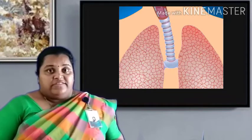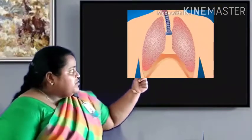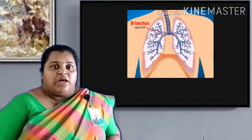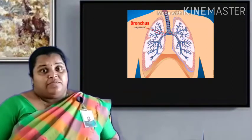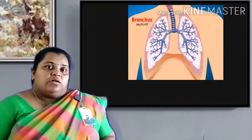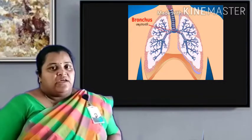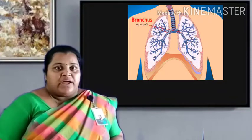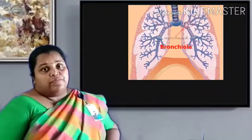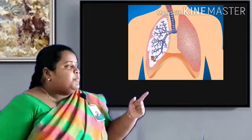Before entering into the lungs, the trachea divides into two and these are known as bronchi — bronchus is singular and bronchi is plural. Bronchi are also made up of cartilaginous rings. Then bronchi enter into the lungs and divide into minute branches known as bronchioles.